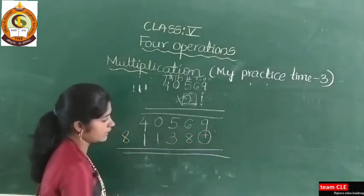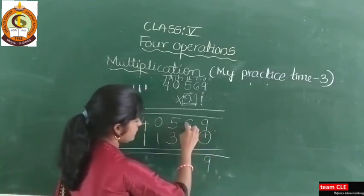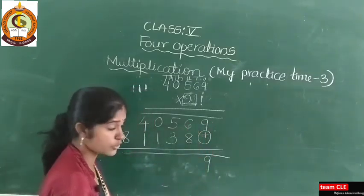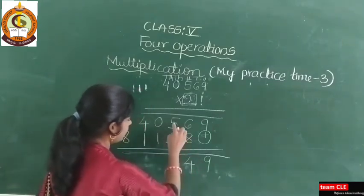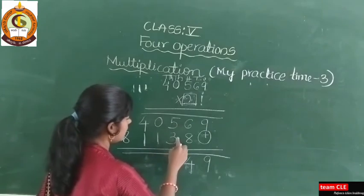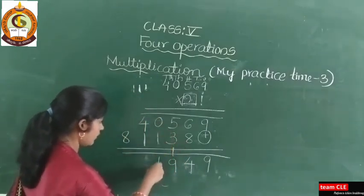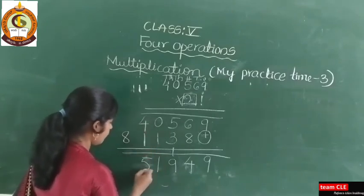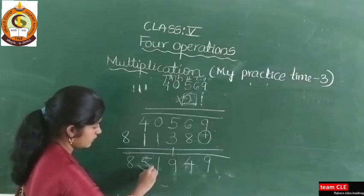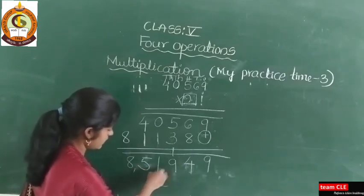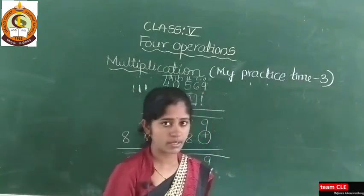Now you need to add the numbers. Nine plus zero is nine. Six plus eight is 14 — carry 1, write 4. Five plus three is eight, eight plus one is nine. Zero plus one is one. Four plus one is five. And this eight you keep as it is. This will be the answer: eight lakh fifty-one thousand nine hundred and forty-nine.